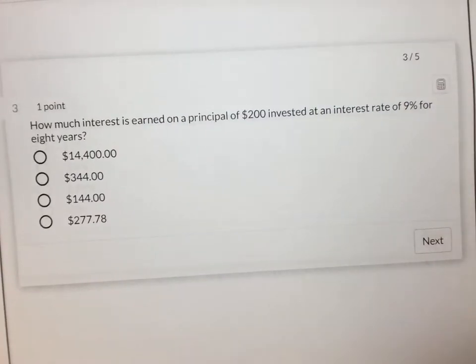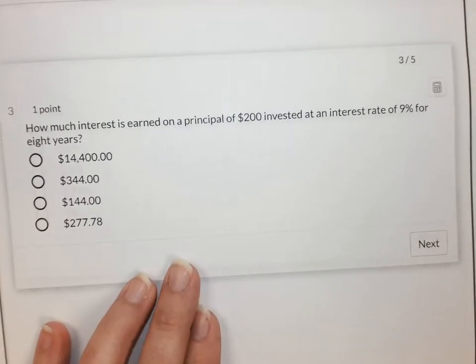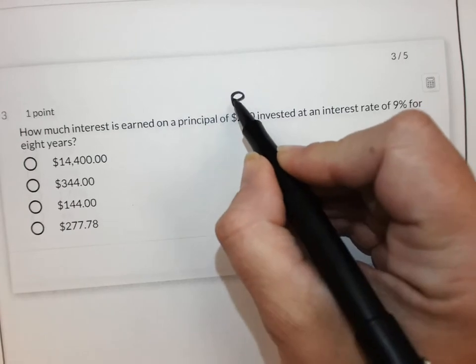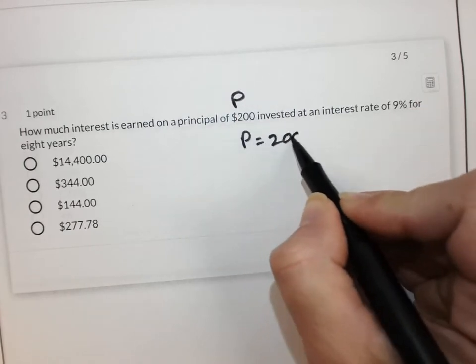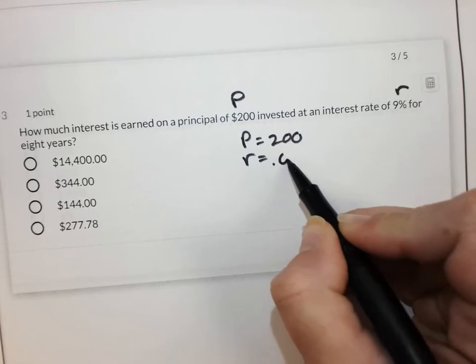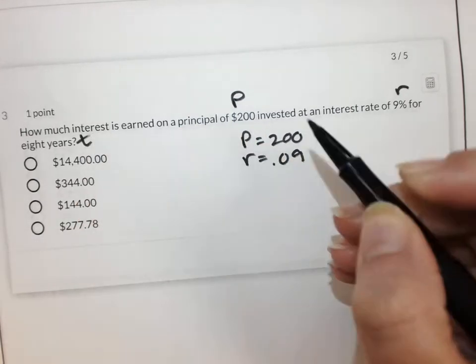Moving on to number three. Number three says, how much interest is earned on a principal of 200? A rate of 9% for eight years.